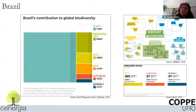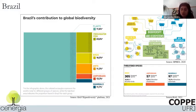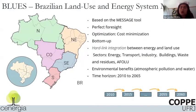Why are we focusing on Brazil? Brazil has the highest mega-diversity in the world - it has around 23-24% of all freshwater fish in the world, for example. There are a lot of threats to biodiversity in Brazil, and biodiversity could be an important solution in this transition to a more low-carbon world. We are looking into the BLUES model, which is a perfect foresight optimization model. Now we are finally trying to insert biodiversity into the BLUES model. The first thing we are doing is a post-processing analysis.